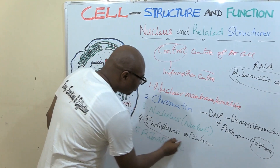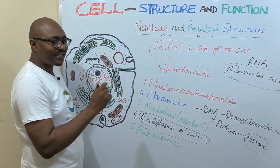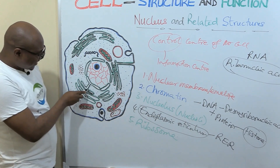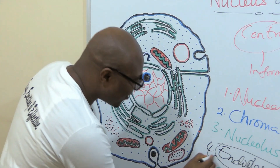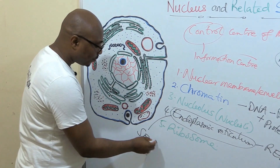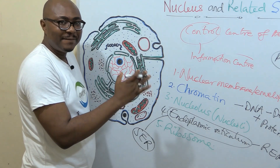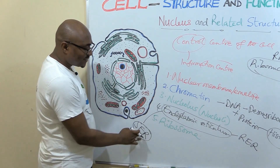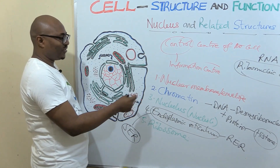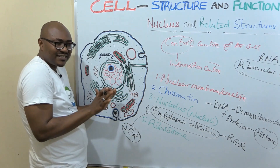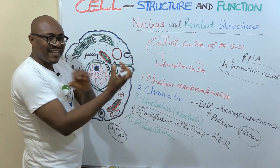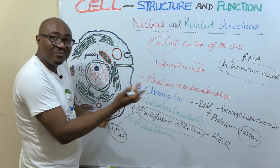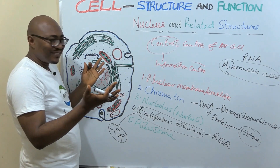The endoplasmic reticulum that has ribosomes attached to it is called the rough endoplasmic reticulum. The other type, which doesn't have ribosomes attached, is called the smooth endoplasmic reticulum. It is mainly involved in lipid synthesis and also some detoxification of substances in the cell. So: rough ER for protein synthesis, smooth ER for lipid synthesis.